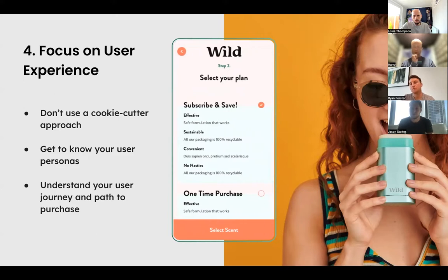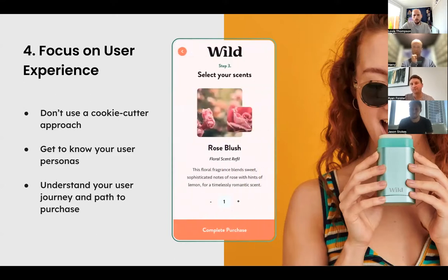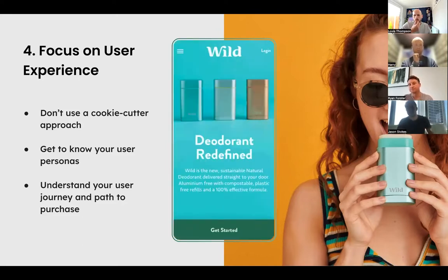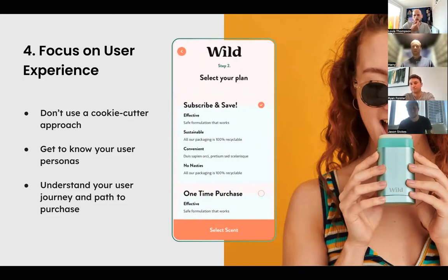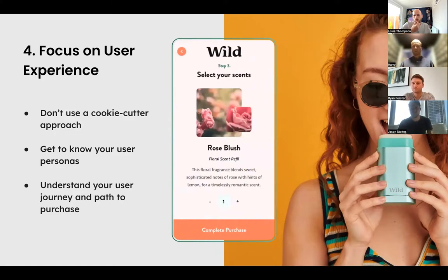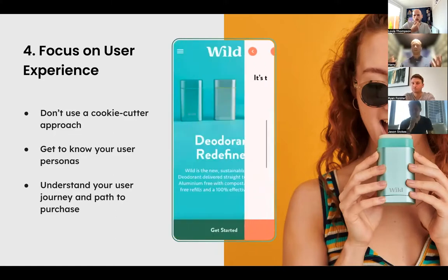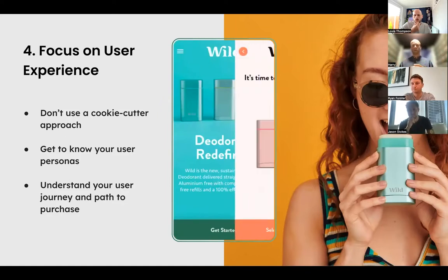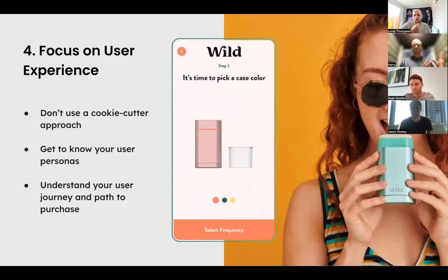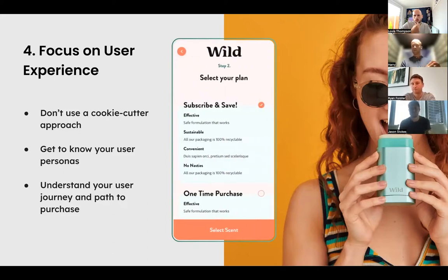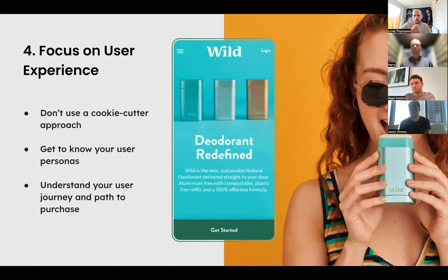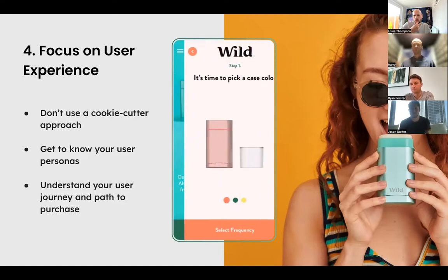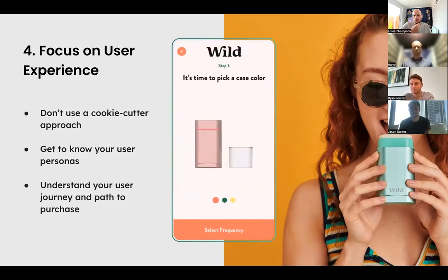Understanding exactly what subscription to move the customer onto can have a marked impact on subscription churn. One of the biggest drivers of churn is stockpiling — people get too much product because they've picked the wrong size or frequency. If you focus on user experience at the start and guide them through a well-organized quiz to understand their needs on a granular level, you can match them onto the perfect subscription, which means the lifetime value of that subscriber is going to be much higher generally.